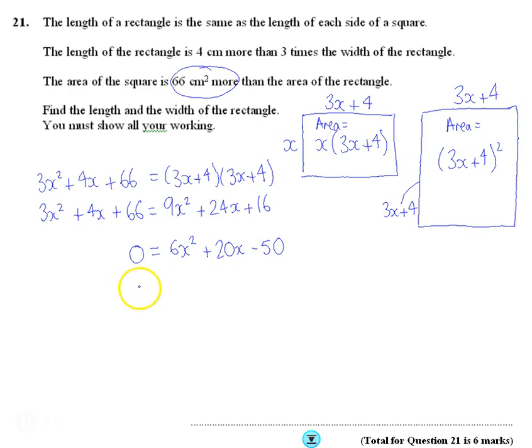So what I'm really trying to solve is 6x squared plus 20x minus 50. I'm just going to write it the other way around. Is equal to 0. So I'm going to divide everything by 2. Because it's equal to 0. So I get 3x squared plus 10x minus 25 is 0.